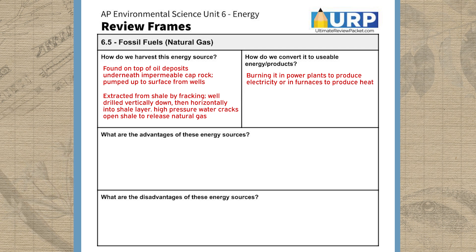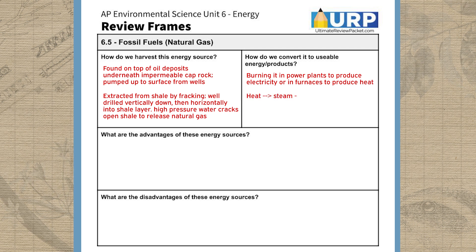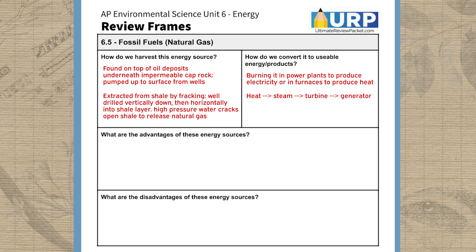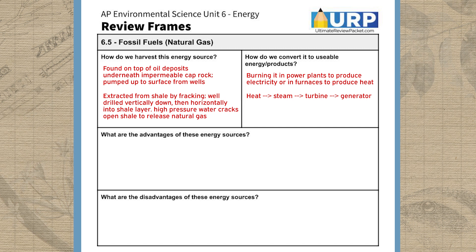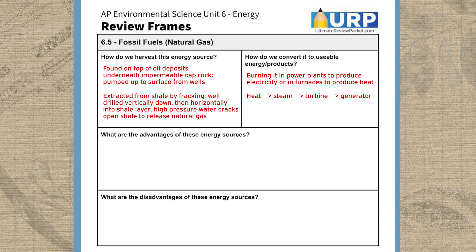When we use natural gas to generate electricity, we should remember that burning it produces heat, that heat converts water into steam, that steam can turn a turbine, which can then power a generator that produces electricity.